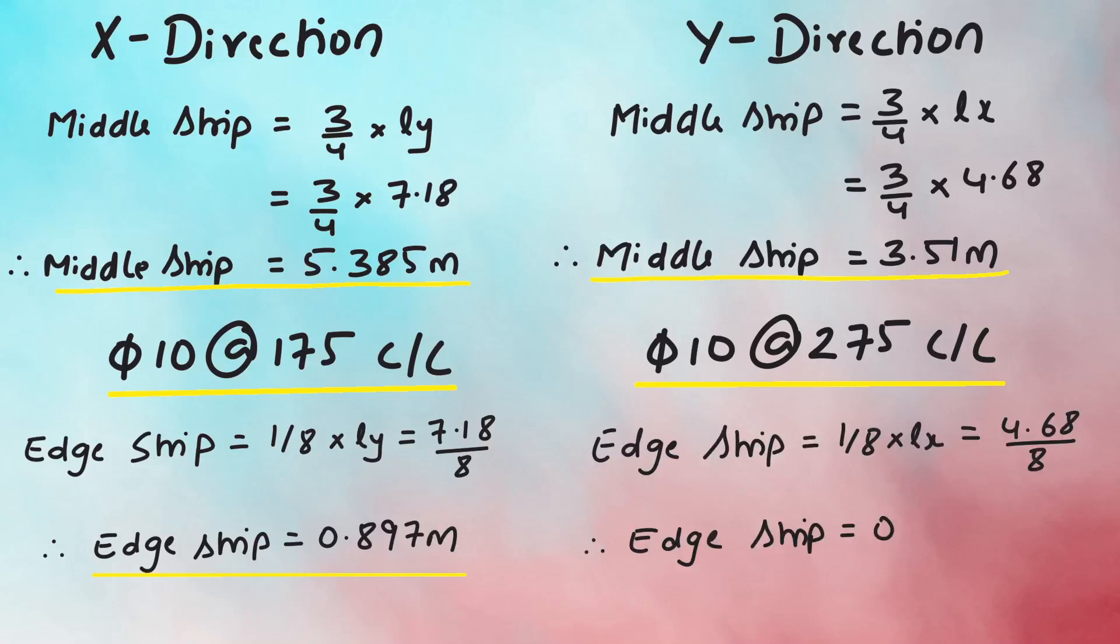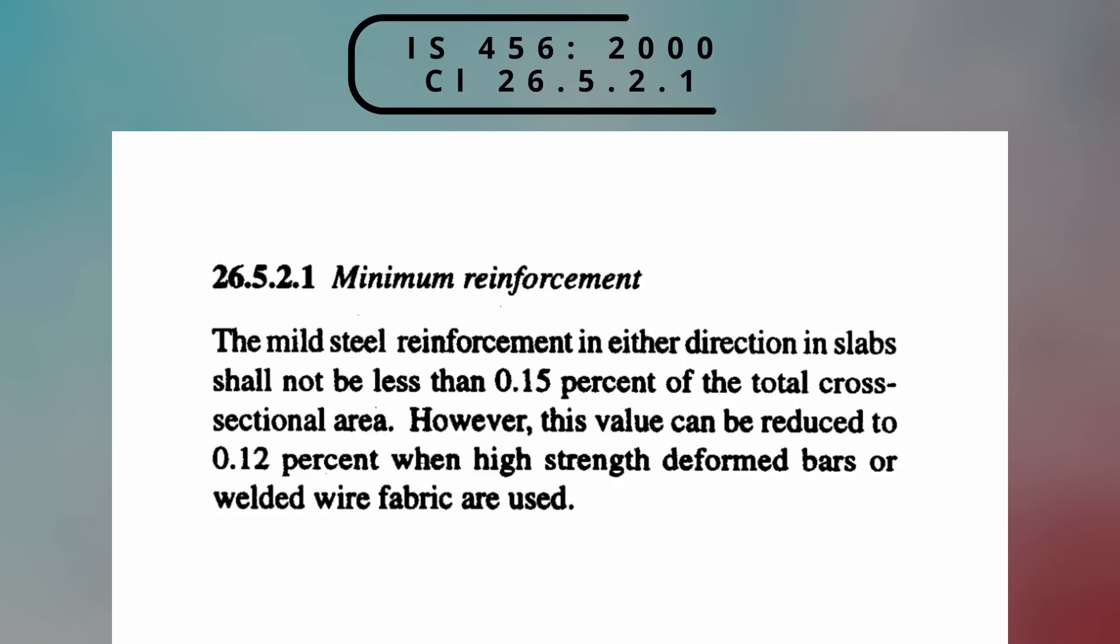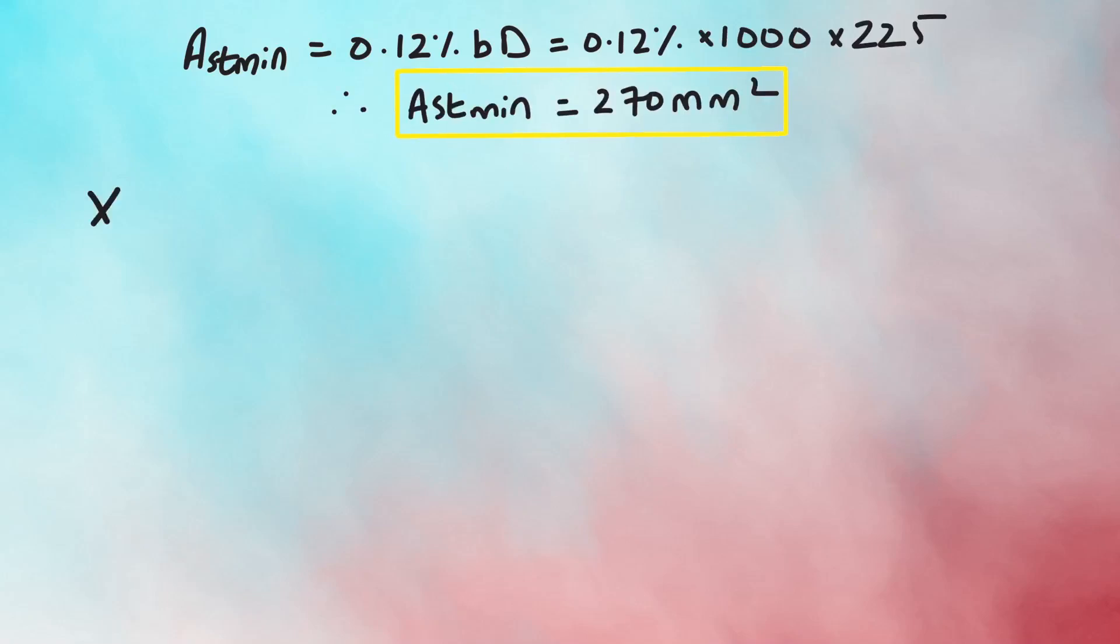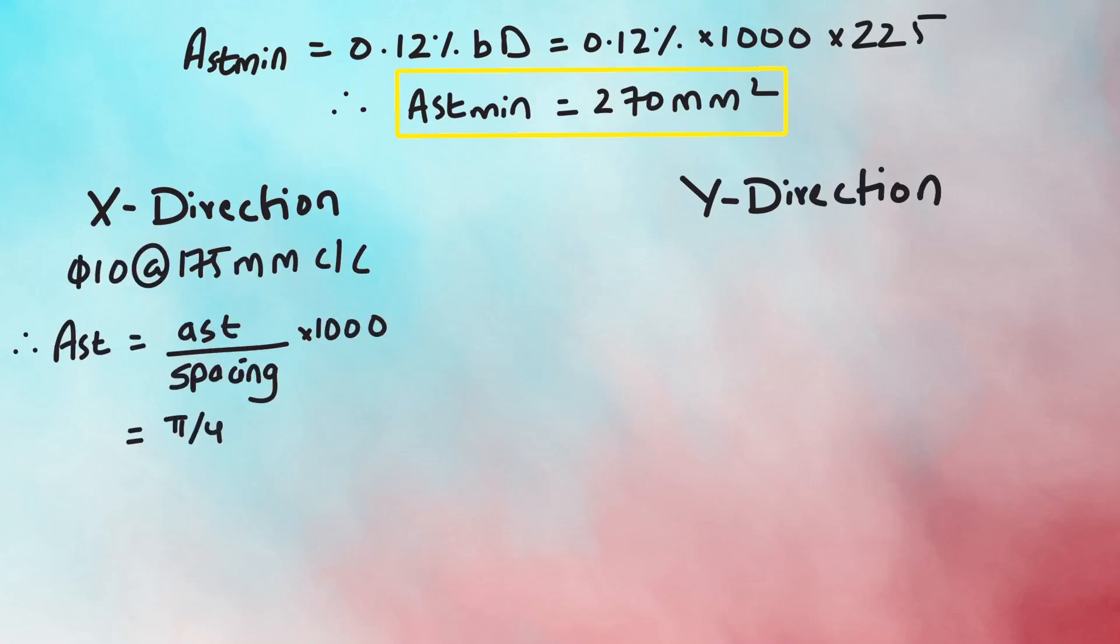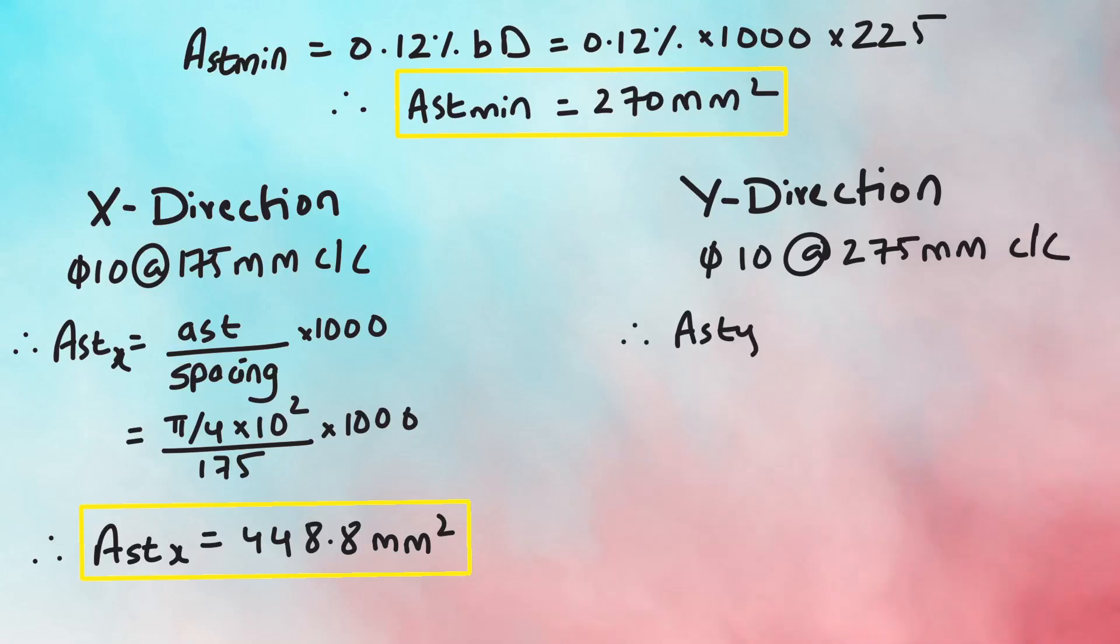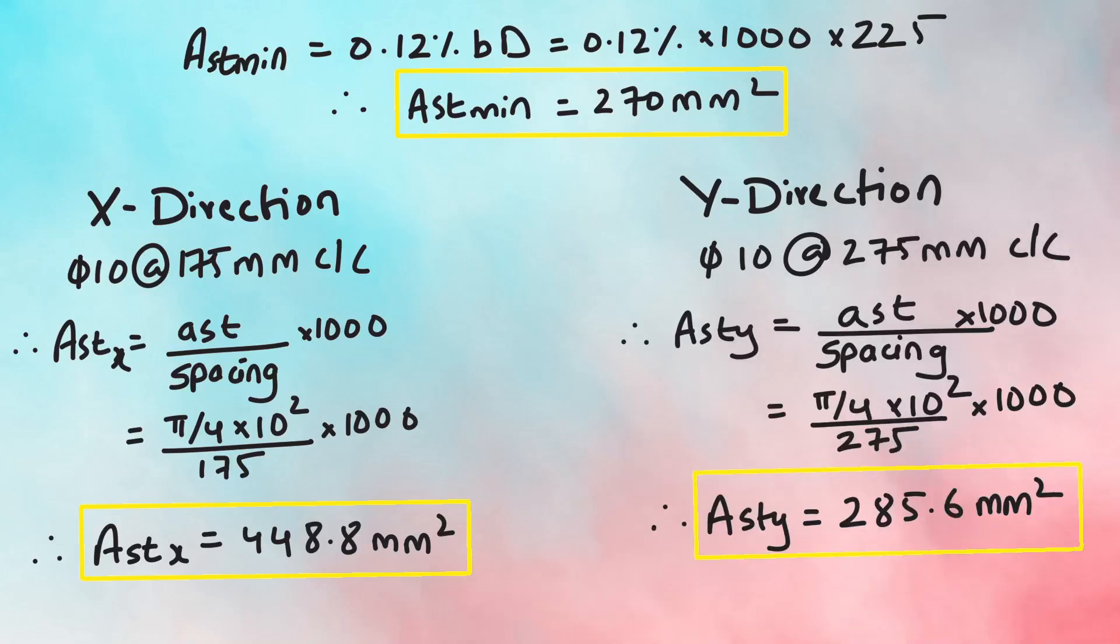For edge strips we will provide minimum reinforcement as per clause 26.5.2.1 which says the minimum reinforcement shall not be less than 0.15% for mild steel i.e. Fe 250 and 0.12% for HYSD i.e. Fe 415 and Fe 500 steel. Since we are using Fe 500 steel, 0.12% of total cross sectional area is 270 mm square which is less than the area i.e. 448.8 mm square as main reinforcement in X direction and 285.6 mm square for distribution steel in Y direction. Hence the design meets the minimum reinforcement criteria and it is safe.